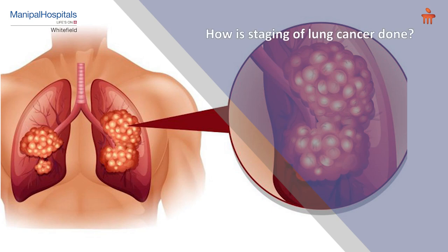Once lung cancer has been confirmed by biopsy, further staging is required to assess the extent of spread and to plan the treatment. Staging is done by further imaging with PET-CT scan, abdominal scans, bone scan, and brain imaging. It may also require further biopsy in the form of thoracoscopic biopsy of the pleura or a biopsy of suspected lymph nodes.